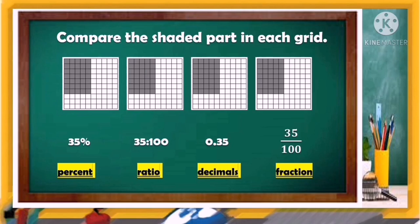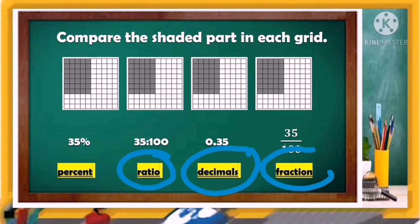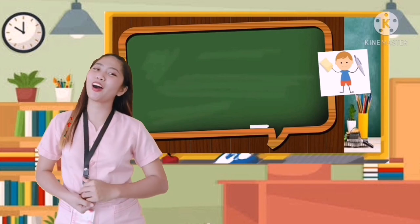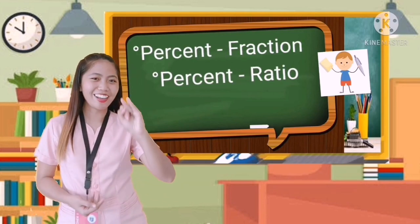The decimal for the third figure is 35 hundredths, while its fraction is 35 over 100. As we have learned, 35 out of 100 is equivalent to 35 percent. In this lesson, I will show you how to change percent into fraction, ratio, and decimal.